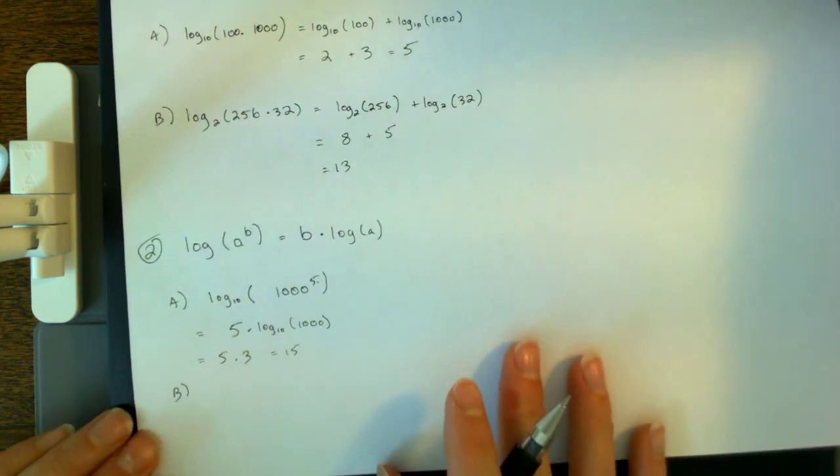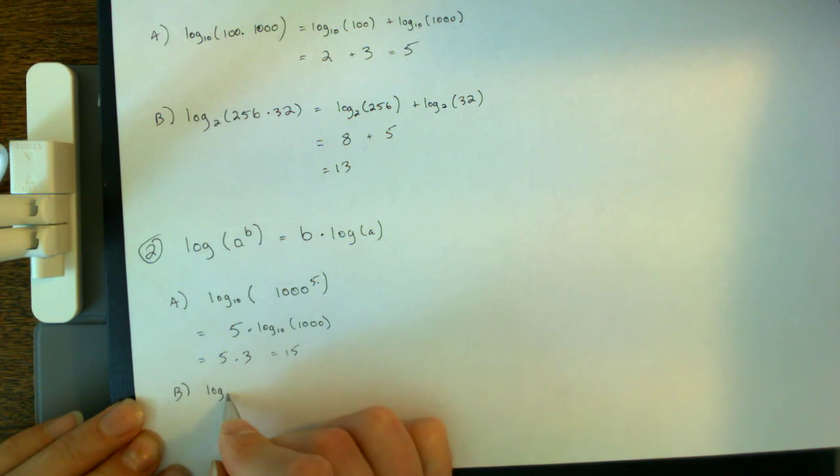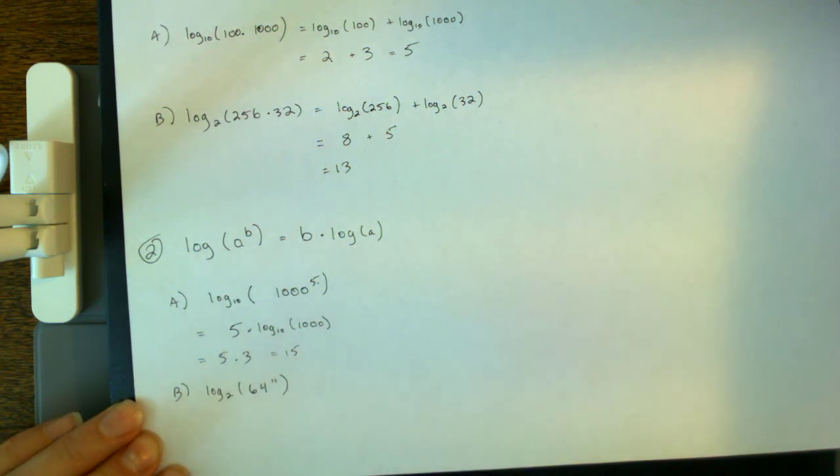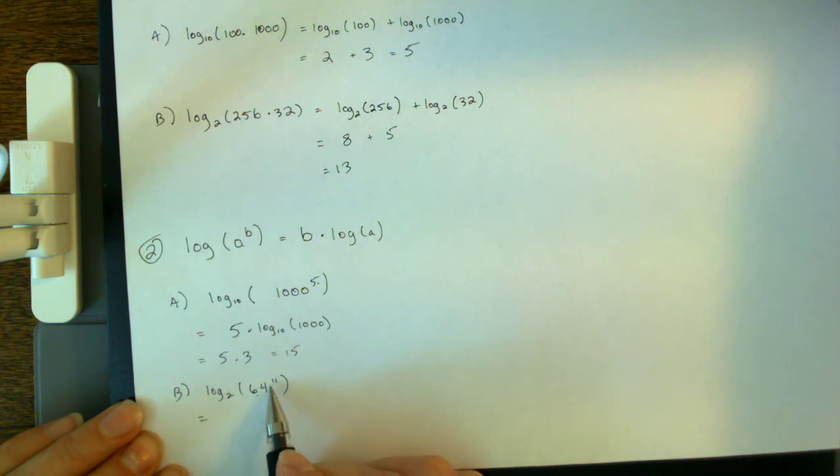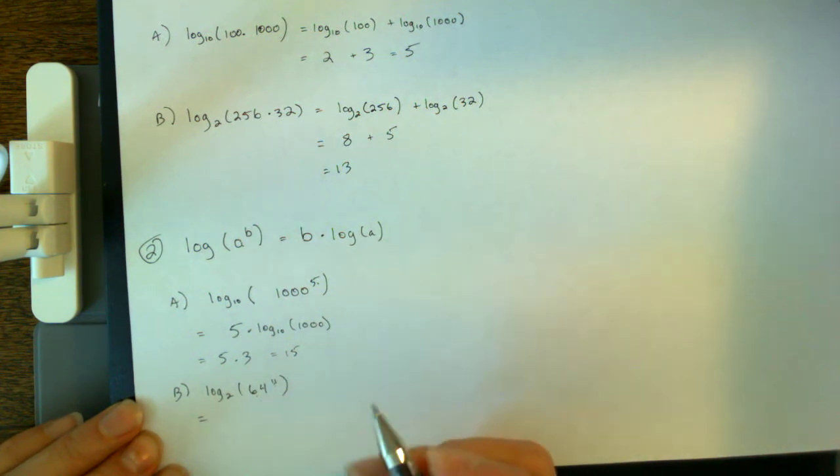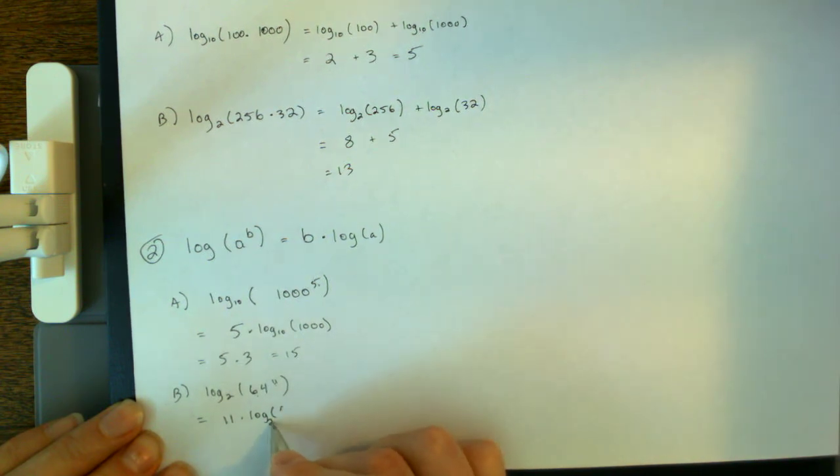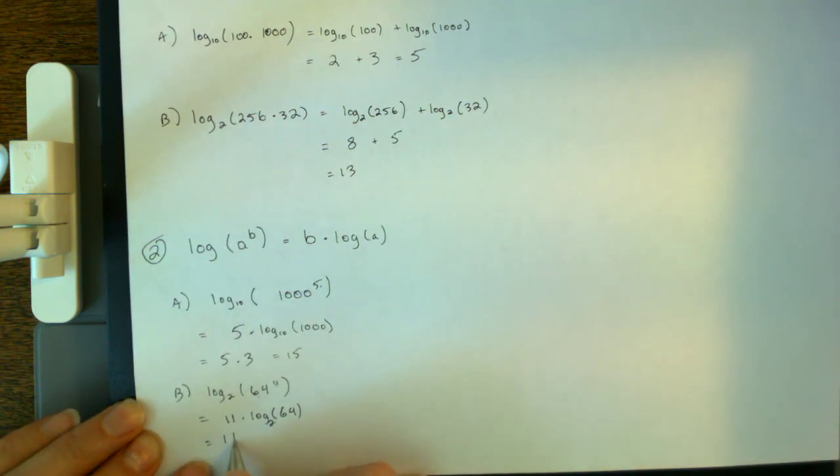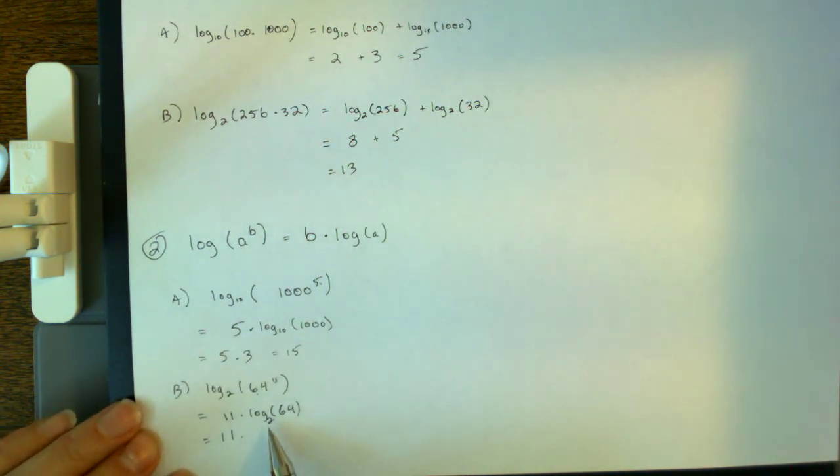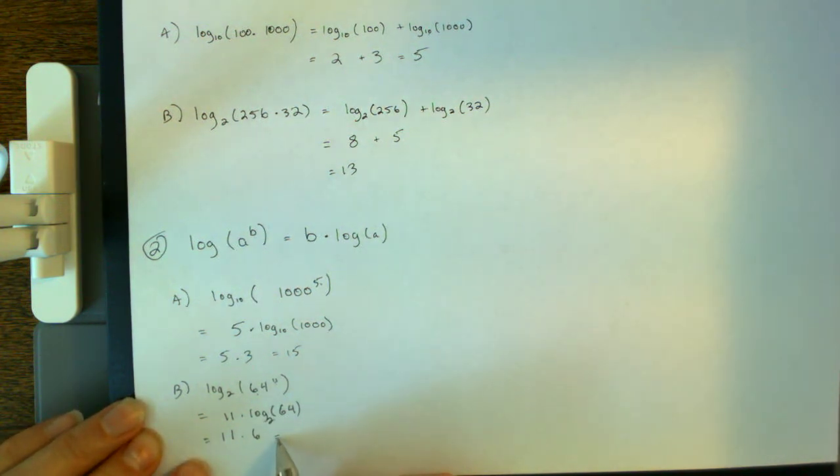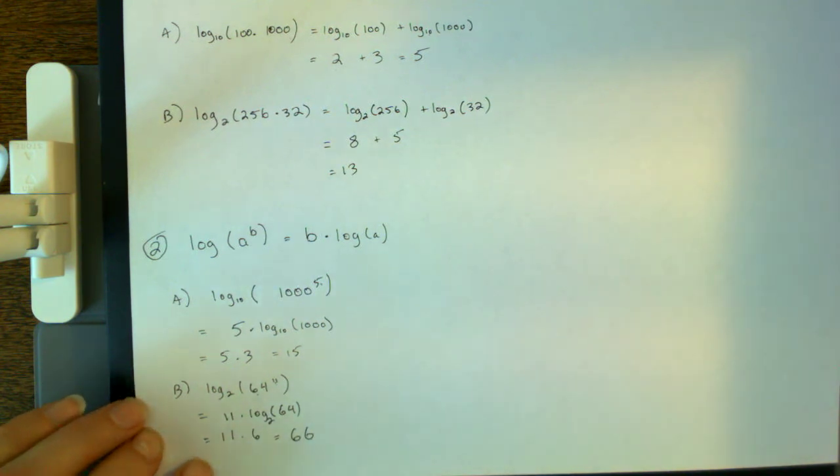Let's try a second example, b. How about this one? Log base 2 of 64 to the 11th power. By our rule, this is our a, this is our b. I've got a to the power b. That's the same thing as taking this exponent right here, 11, bringing it out front, times log base 2 of 64. This is 11 times, well, what's log base 2 of 64? What power do I have to raise 2 to in order to get 64? That number is, let's you pause for a minute there. It's 6, right? Because 2 times itself, 6 times gets you 64. So this whole thing is 11 times 6, and that's 66.